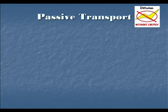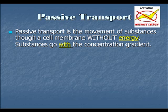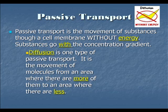Let's first talk about passive transport, or transport without energy. Passive transport is the movement of a substance through a cell membrane without the use of energy — the substance goes with the concentration gradient. One example is diffusion, which is the movement of molecules from an area where there are more of them to an area where there are less of them.